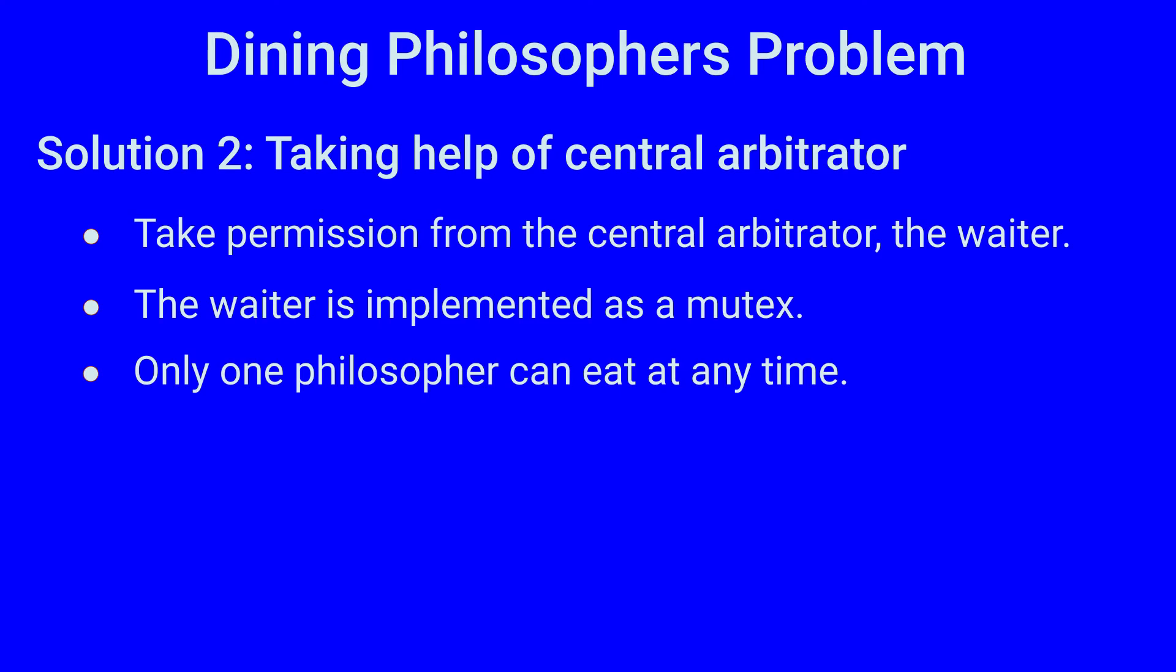Only one philosopher can acquire the mutex and so only one philosopher can eat at any time. So this solution has less parallelism as compared to the first solution. The positives of this solution are that it is simple, easy to understand and implement and works very well.